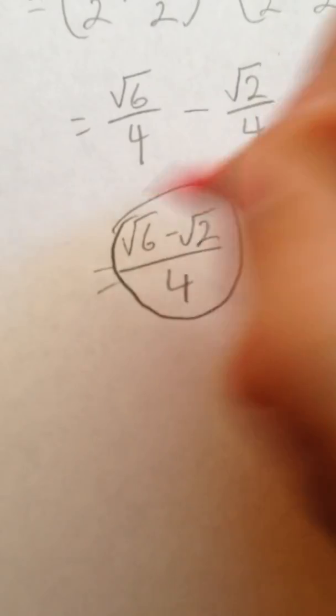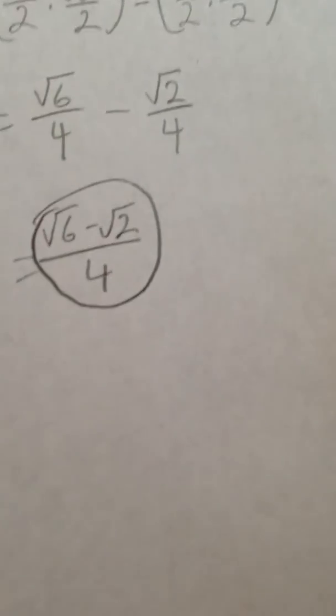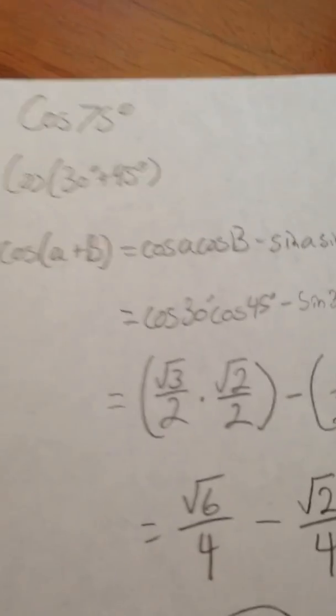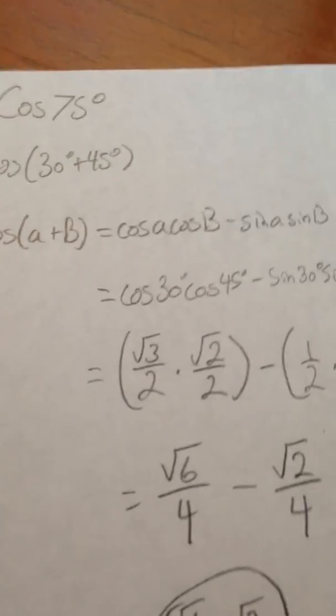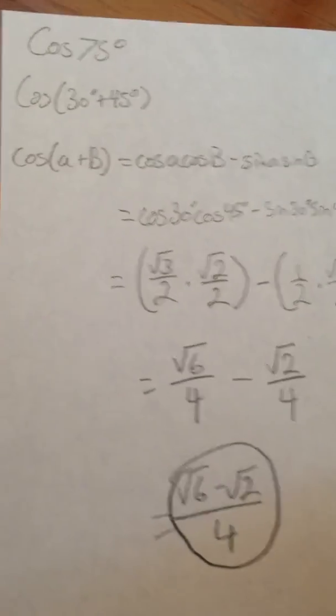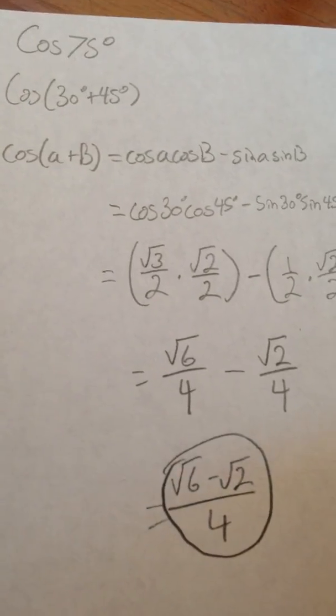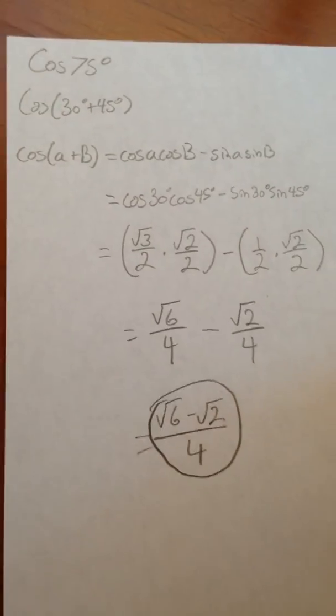And that is your final answer to the exact value of cosine of 75 degrees. This was how you find the exact value of a trigonometric expression using the sum and difference formulas.